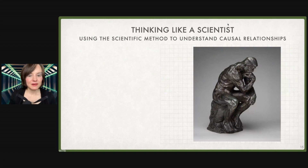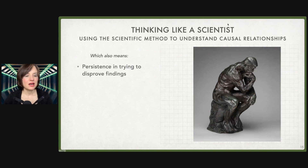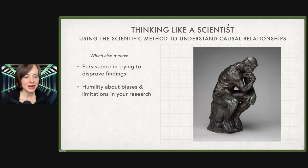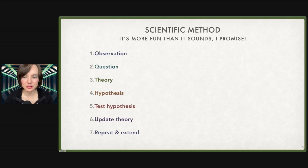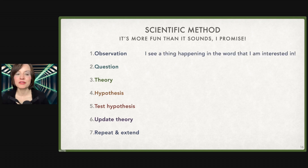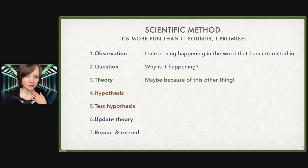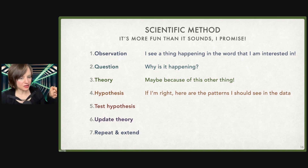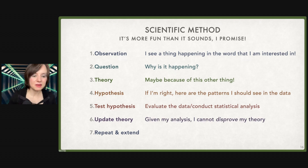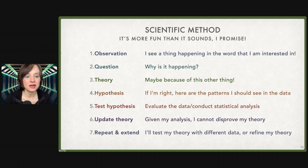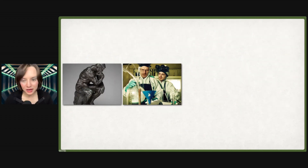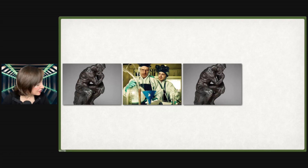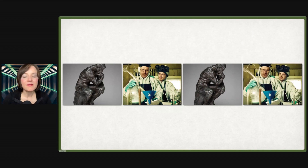When we're thinking like a scientist, we're using the scientific method to understand causal relationships. This means having persistence in trying to disprove findings, humility about our biases and limitations in our research, and knowing that we cannot prove a theory — only disprove it. The scientific method: we observe something in the world, we ask why it's happening, we hypothesize maybe it's because of this thing, and if I'm right, here are the patterns I should see. Then I evaluate the data, conduct my statistical analysis, update my theory, and repeat with new data and new hypotheses. Data only plays a role in a few of these steps, not all of them. To summarize: it's thinking really hard, getting into the lab or into our spreadsheet or pandas data frame and running some tests, then thinking again — why did I see those results? Did I study what I thought I was studying? Is this data any good? How could I do better? And getting back to the lab again and again.